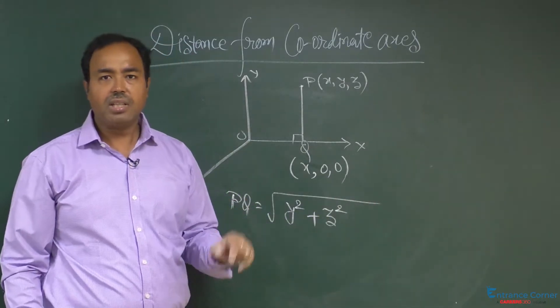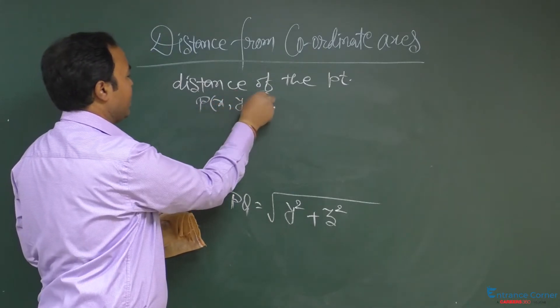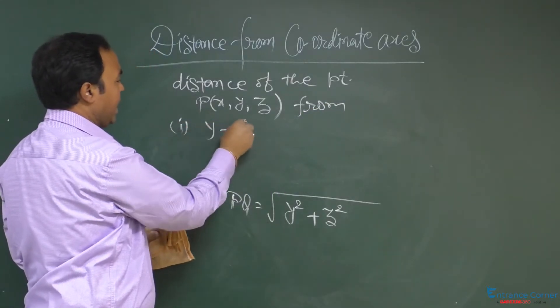If the coordinate is x comma y comma z, the distance of the point from the x axis is equal to root under y square plus z square. Similarly, the distance of the point P x comma y comma z from the y axis is equal to under root x square plus z square.